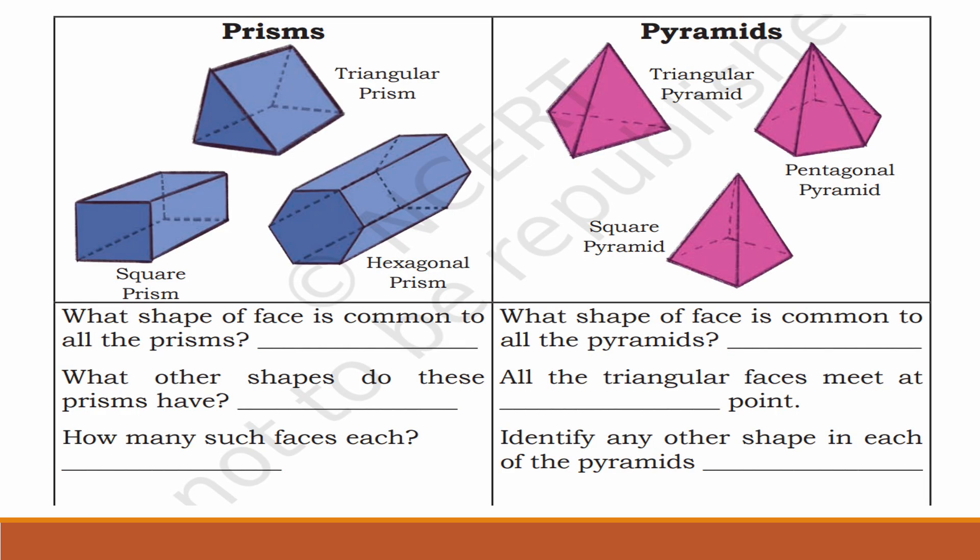Next, we will study about prisms and pyramids. Have you heard of prisms? What is a prism? A prism is a three-dimensional shape. It has two identical parallel ends called bases and flat sides that connect the bases. The shape of the base determines the type of prism. For example, a triangular prism has a triangular base. Here we can see a triangular prism, hexagonal prism and square prism.